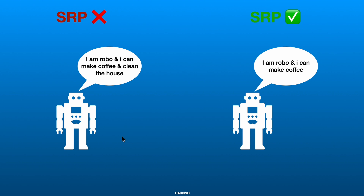Let's take one more real-world example. Say you go to market and purchase a robot that says: I'm a robot and I can make coffee AND clean the house. Notice the AND keyword — this breaks the SRP principle. A robot following SRP can do only one job: I'm a robot and I can make coffee. This robot is an expert in making coffee only, whereas the other robot claims it can make coffee and clean houses too. As SOLID principle lovers, we go with the robot that has only one single responsibility.